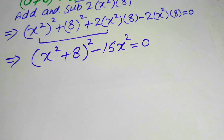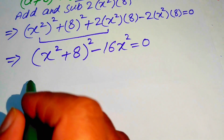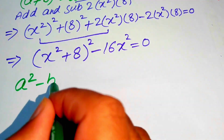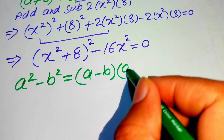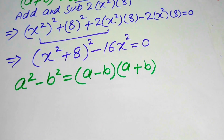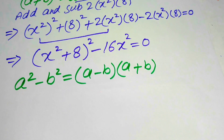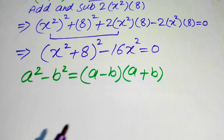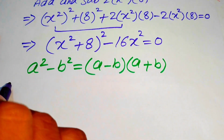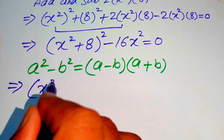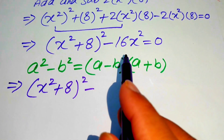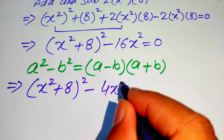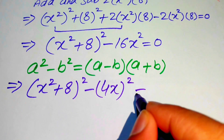Here we need another square identity: if we have a squared minus b squared, it equals a minus b times a plus b. We use this difference-of-squares identity on the above term.